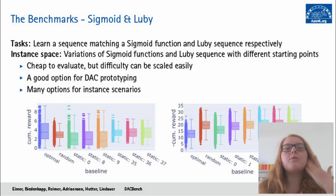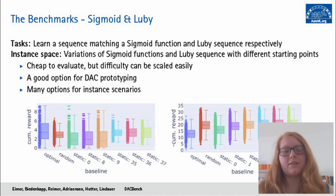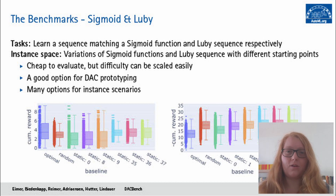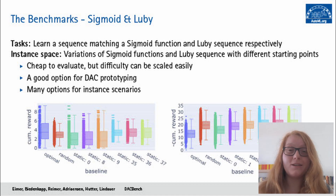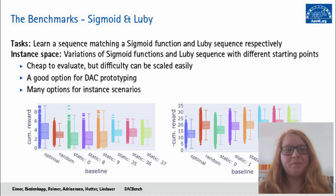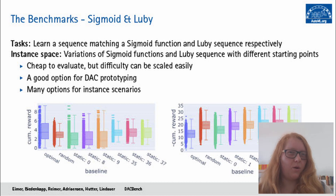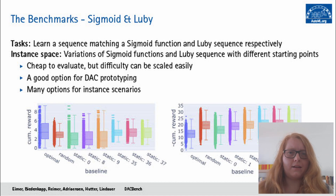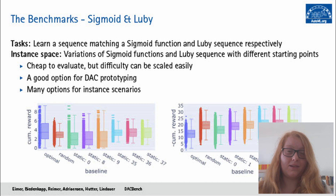The two toy benchmarks have a bit of a different profile. Looking at the box plots showing evaluations across our instance sets, on the left in both cases we have the optimal policy that we can compute. Next to it is a dynamic random policy, where at each step we chose a random value from the configuration search space. For SIGMOID, we have the three best and three worst static policies shown. In SIGMOID we see a very broad distribution of performances, and the dynamic random policy performs somewhere between the best and worst static ones. Depending on the instance, we really need a different policy — the best-performing static policies actually don't perform as well on some instances as the worst ones, even though the worst ones in the mean have a much lower performance.